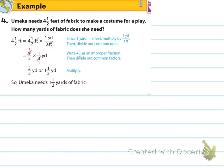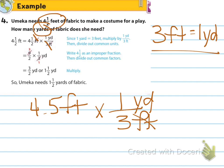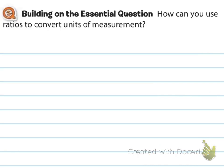Yumeka needs 4 and 1/2 feet of fabric to make a costume for a play. How many yards of fabric does she need? We're going from feet to yards — 3 feet equals 1 yard. Set it up so we can cross-simplify out feet, and the answer will be 1 and 1/2 yards. So how can you use ratios to convert units of measurements? We can cross-simplify out the units and arrive at a different unit using our magic 1. Thanks so much. See you in school.